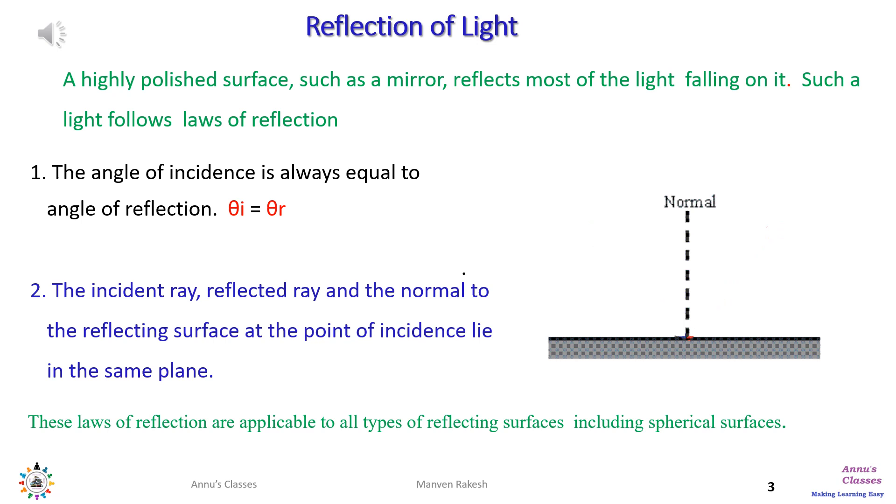Angle of incidence θi is the angle made between the normal and the incident ray which is blue in the figure. Angle of reflection θr is the angle made by the red ray which is the reflected ray and the normal. Second law says the incident ray, reflected ray, and the normal drawn to the reflecting surface at the point of incidence all lie in the same plane.